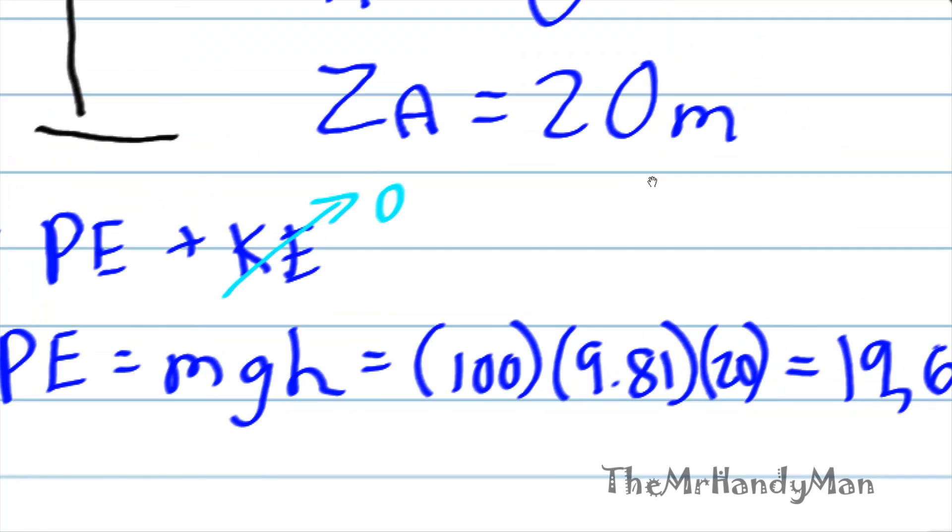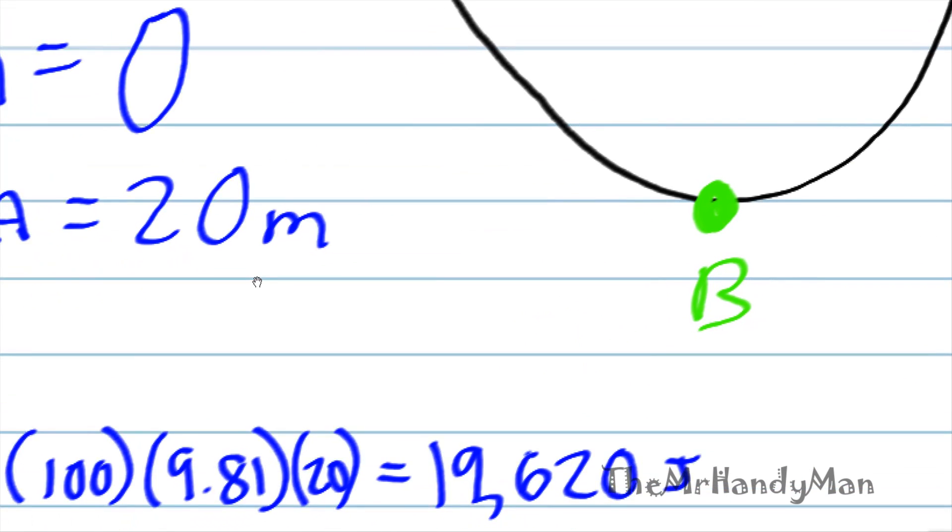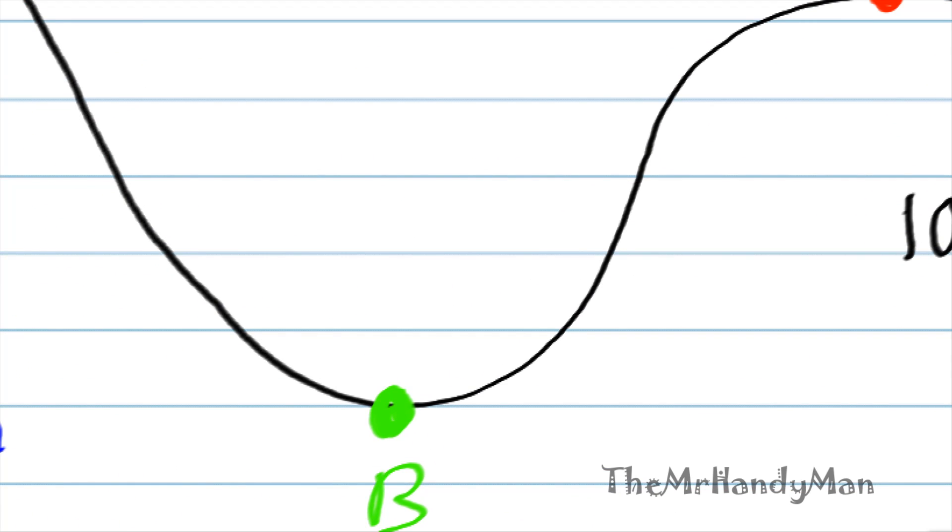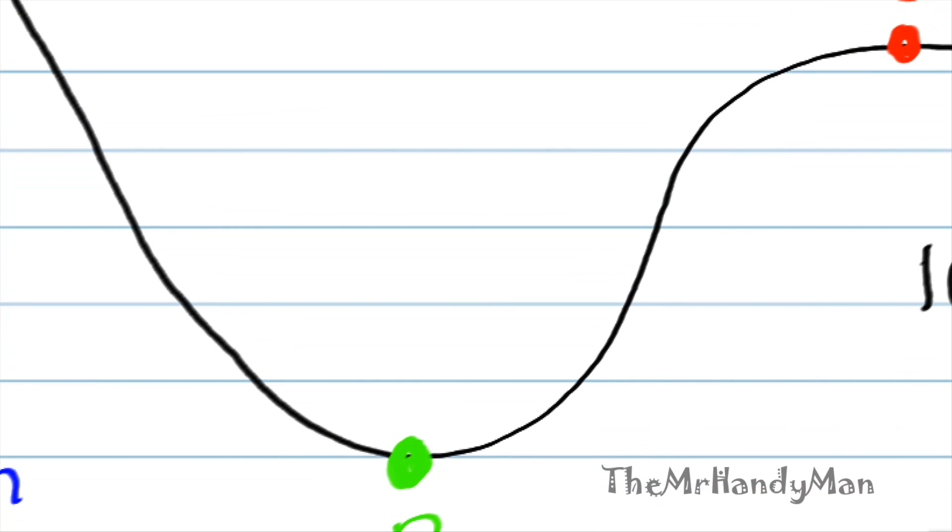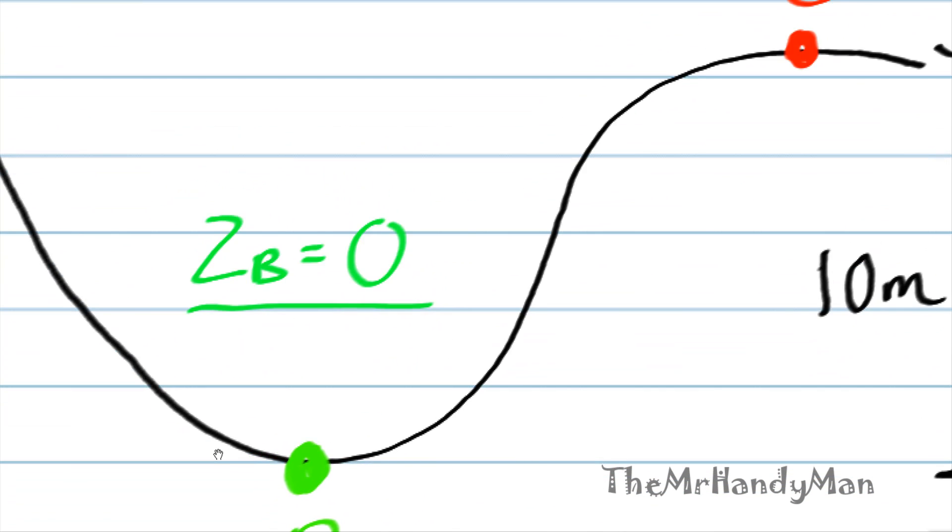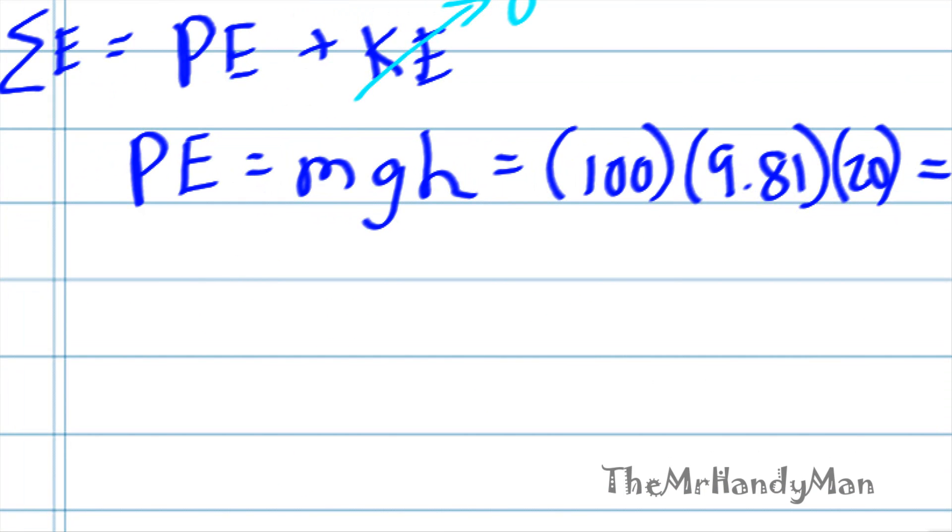So the total energy is 19,620. Well, what does that translate when we hit point B? We don't know the velocity of point B, but we do know that Z of B is equal to zero. This is our reference point, essentially. If the total energy at A is 19,620, then all that energy, assuming it's a frictionless path, all that energy must go into the kinetic energy at point B.